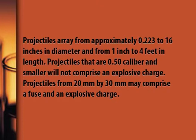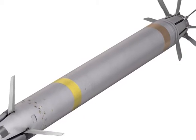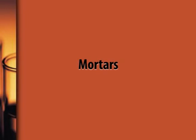Projectiles range from 0.223 to 16 inches in diameter and from 1 inch to 4 feet in length. Projectiles that are 0.5 caliber and smaller will not comprise an explosive charge. Projectiles from 20mm to 30mm may comprise a fuse and an explosive charge. All projectiles larger than 30mm should be assumed to have a fuse and explosive charge, white phosphorus or chemical agent. In general, the larger the projectile, the larger the explosive charge or the amount of chemical agent it will contain, and also the greater the strength of impact and therefore the deeper the projectile may penetrate into the soil.